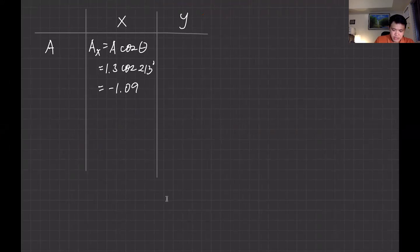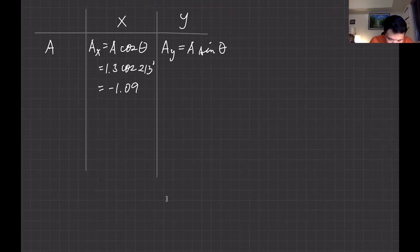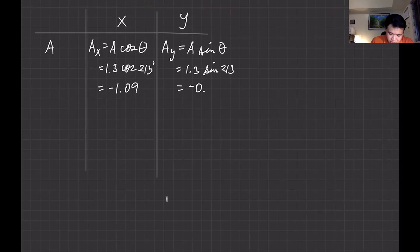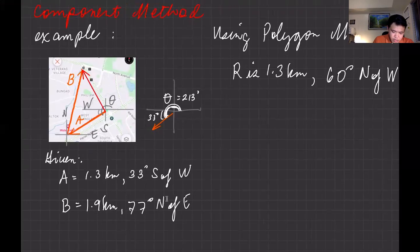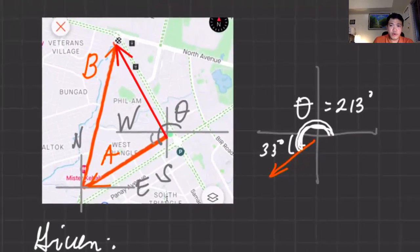For the y-component, Ay equals A sine theta. The theta again is 213 degrees, so that's 1.3 sine of 213. You can verify this with your calculator — you should get negative 0.71 kilometers. I'm not writing the units yet. Now for vector B, I'm going north of east.